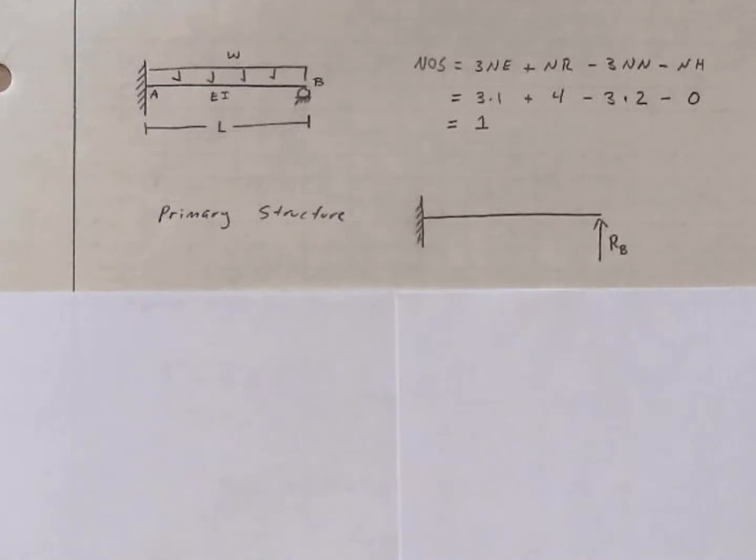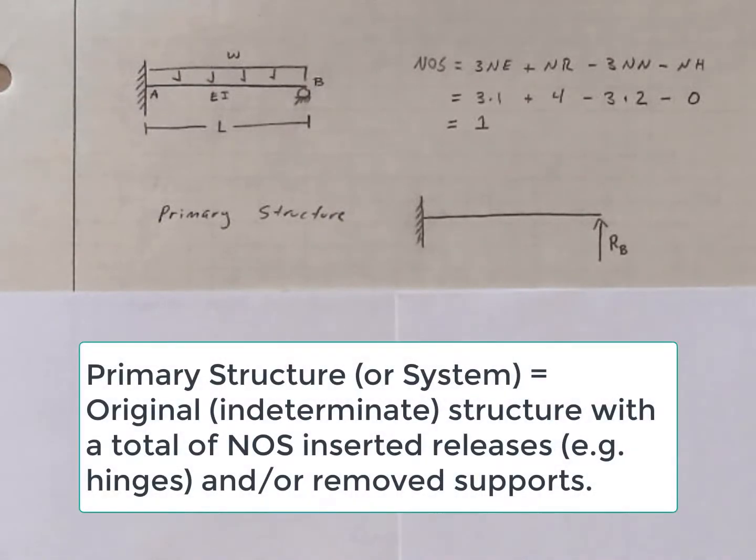We can draw our primary structure, which is the original structure with enough releases or enough supports removed to render it statically determinate. In this case, I've chosen to remove the roller at B. If I remove the roller at B, that gives me simply a cantilever beam, which we know to be statically determinate.